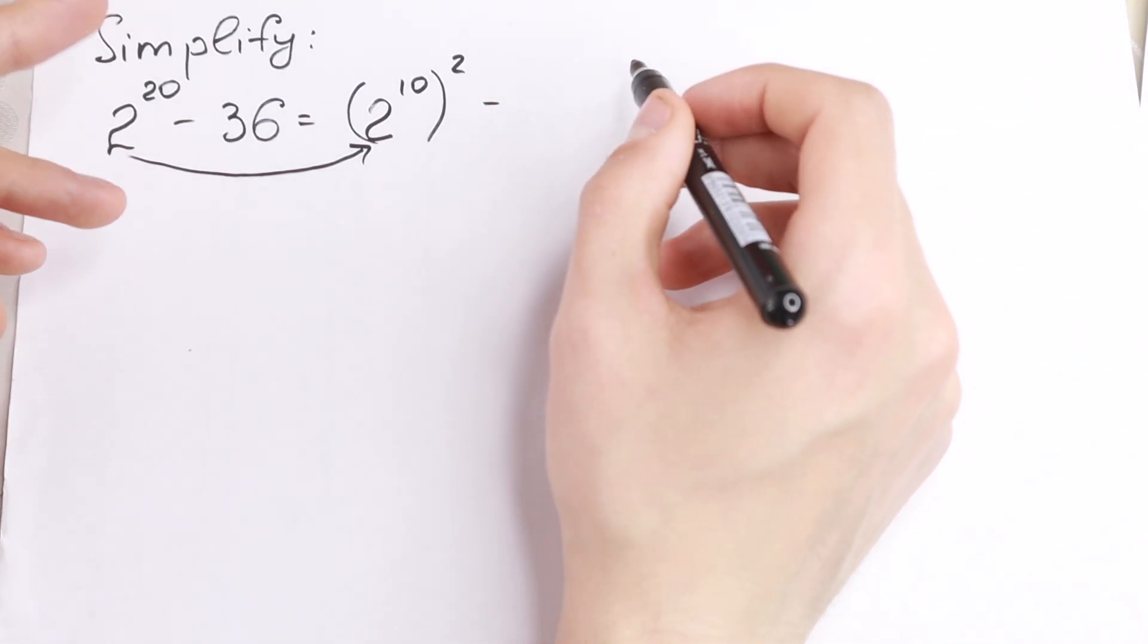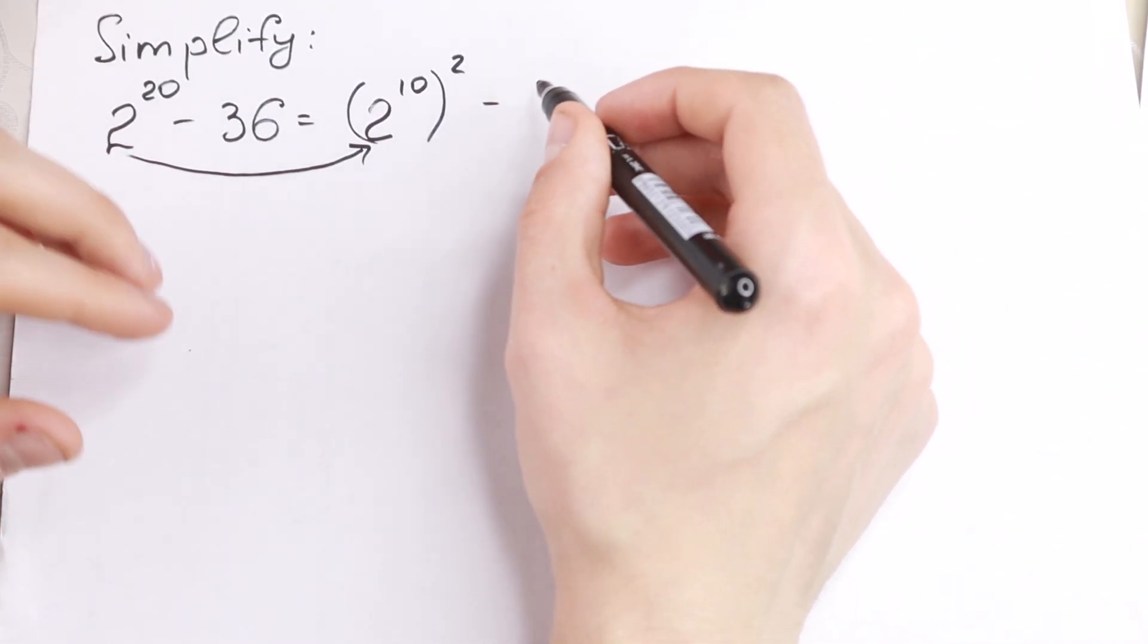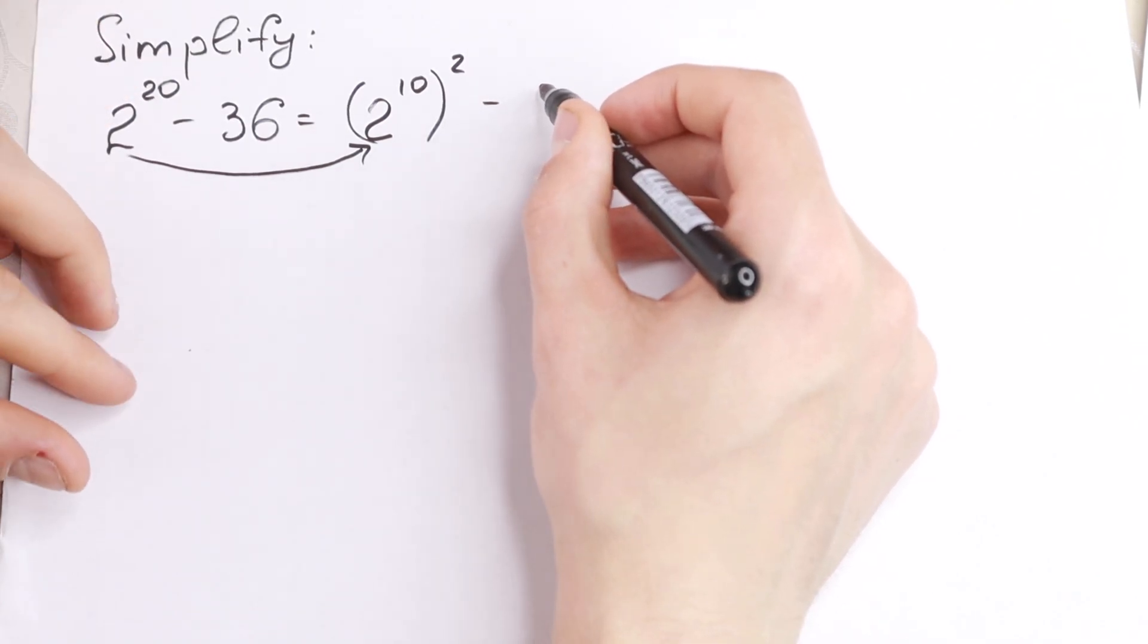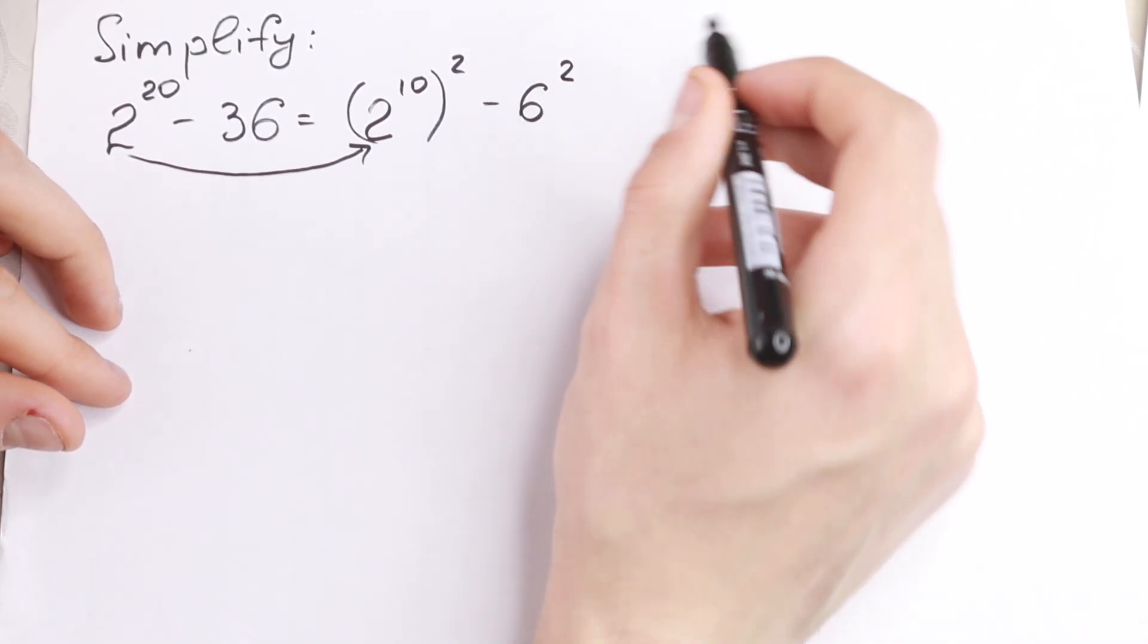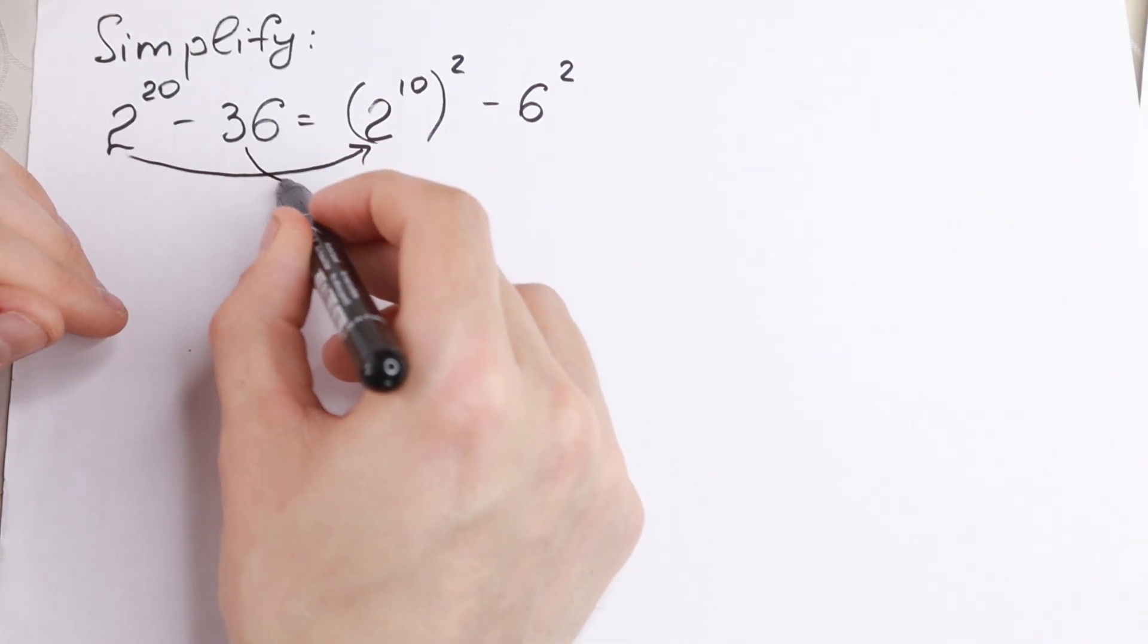And minus this 36, we all know that 36 is a really good number because this is a perfect square, we can write it as 6 square. And take a look what we're going to do in our case.